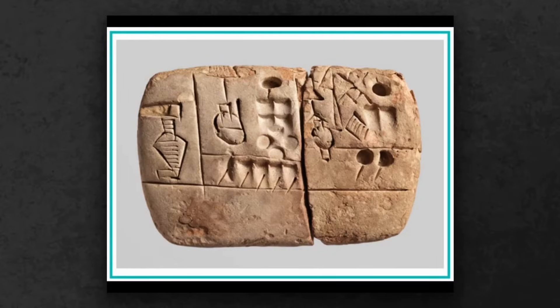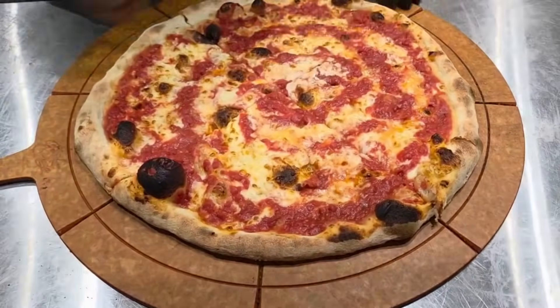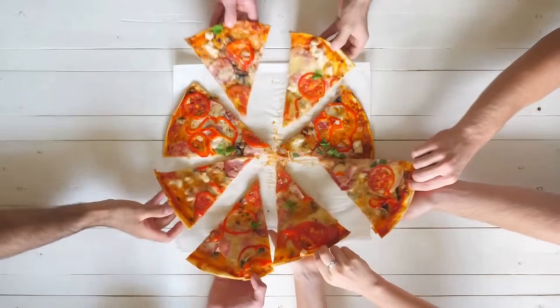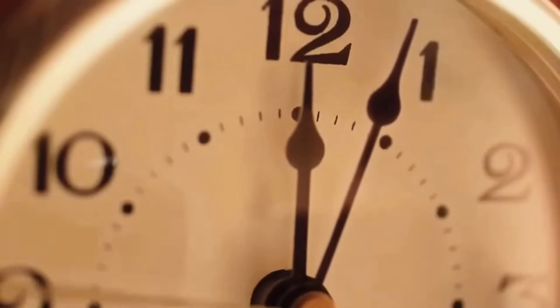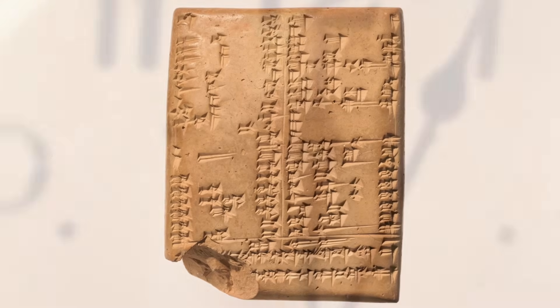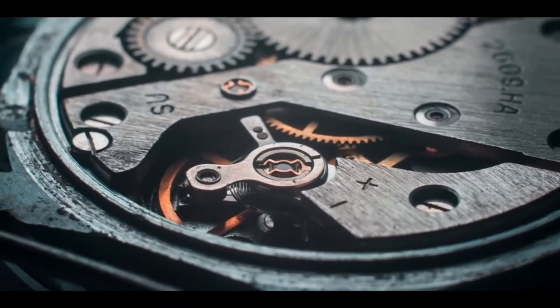Babylonian scribes trained for years to master these calculations. Their multiplication tables and reciprocal tables, all built on base 60, let them handle fractions that stump most people today. The ancient toolkit built for fairness and practicality is still ticking away at the heart of every clock.